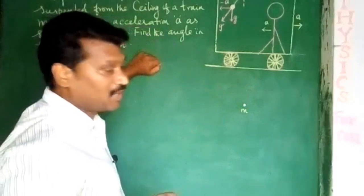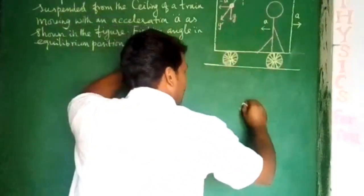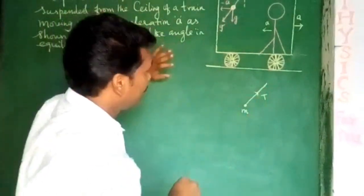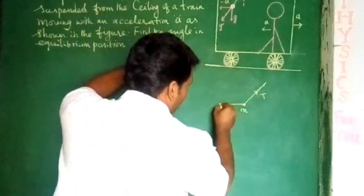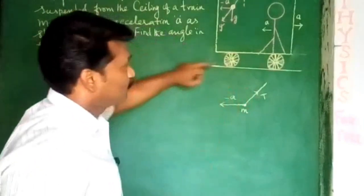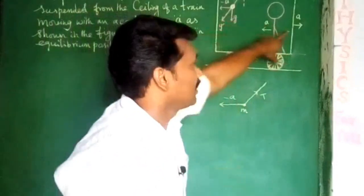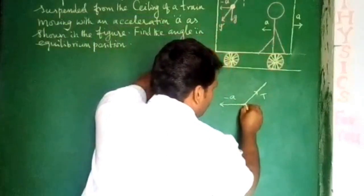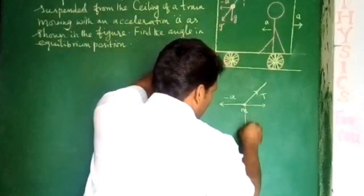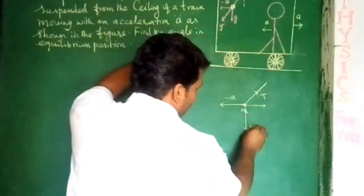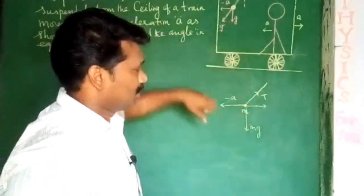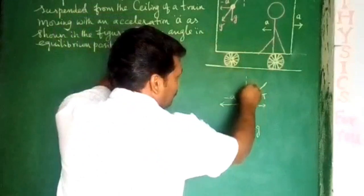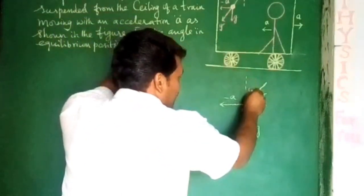The tension on the string is acting along the string. The tension is extended by the string, given the acceleration of the bob. The opposite direction acts on the train. This is the weight of the bob acting in the direction of gravity. The tension and the weight make an angle theta with the vertical.